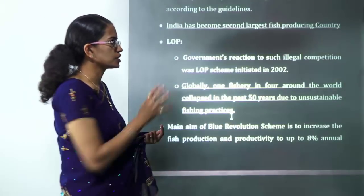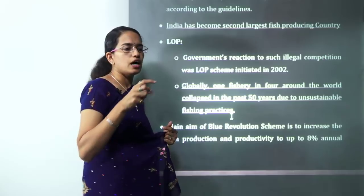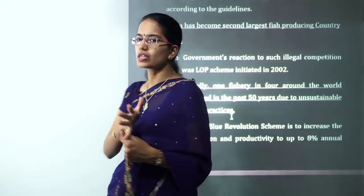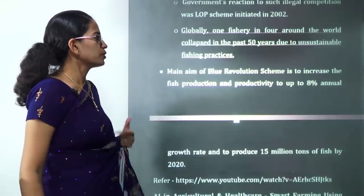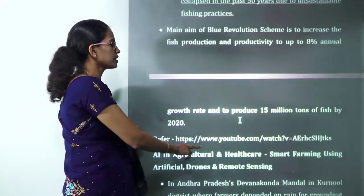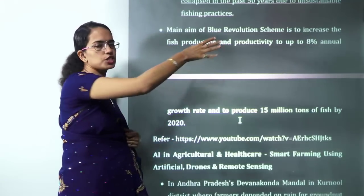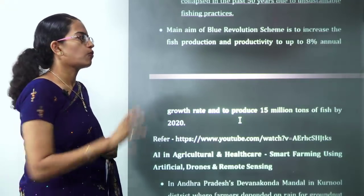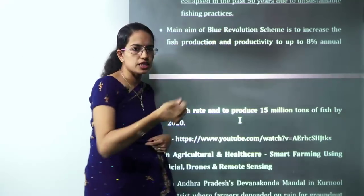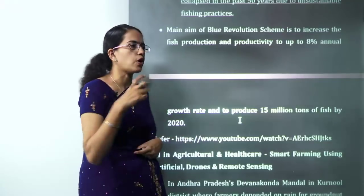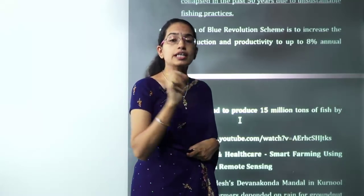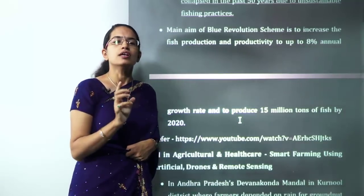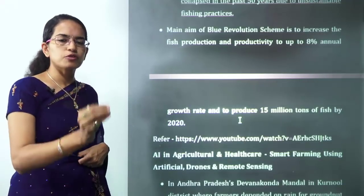India is the second largest fish-producing country. The focus is shifting from ocean economy to blue economy, which is more sustainable. Blue economy covers all ocean activities sustainably. Blue revolution focuses only on increasing fishing productivity. Ocean economy covers all ocean activities but does not necessarily need to be sustainable — it involves exploitation of ocean resources.